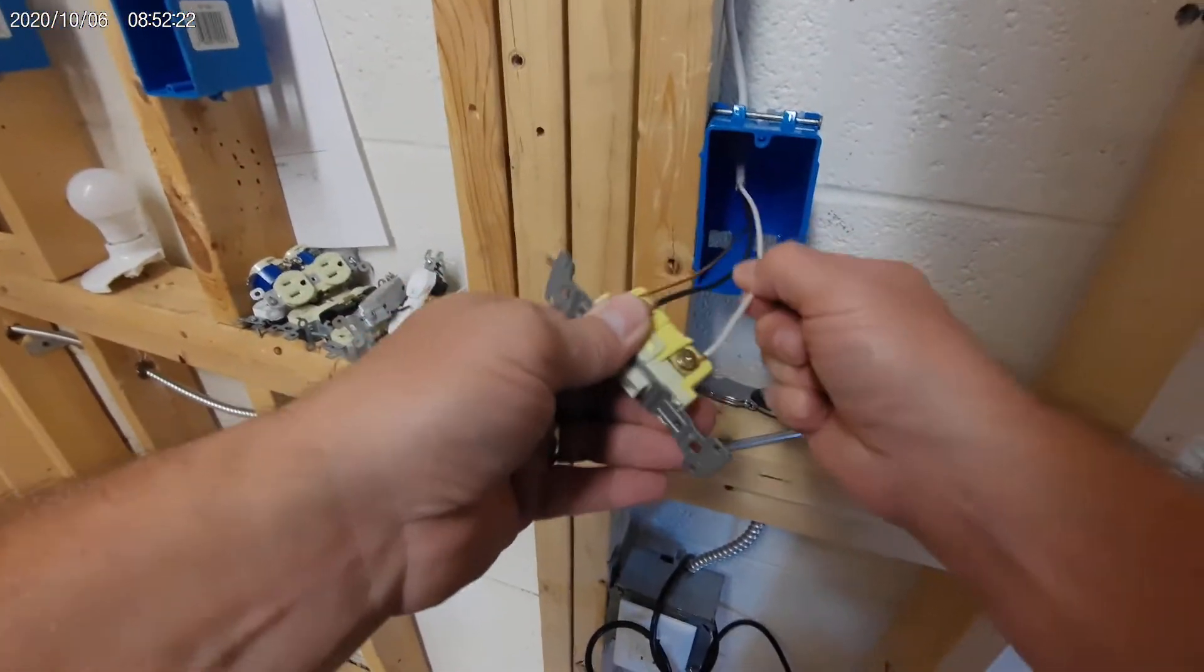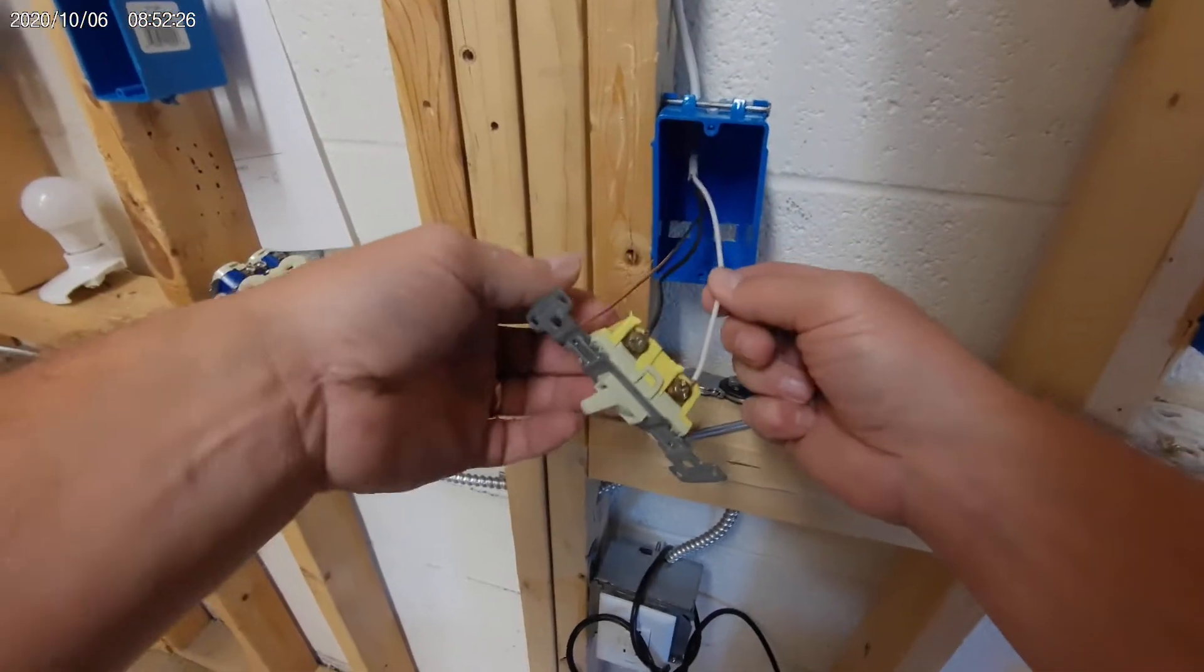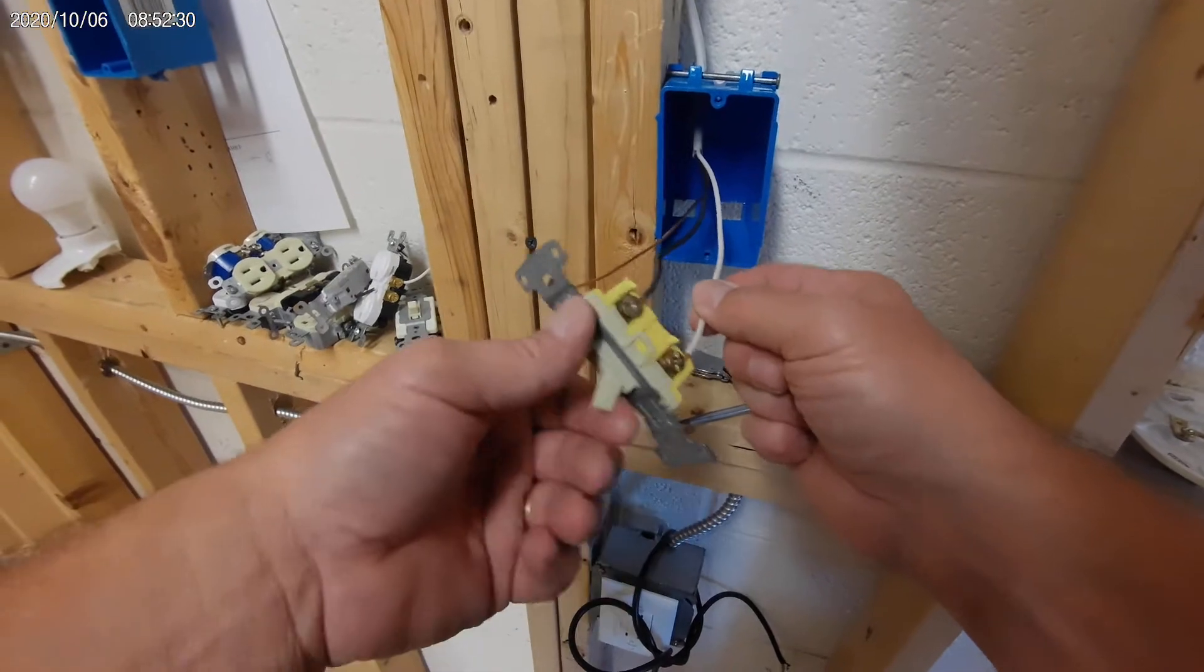This white wire is not a neutral. Usually this will have some black tape on it. This white wire is now your power. Power comes in on the white wire when you turn the switch on.